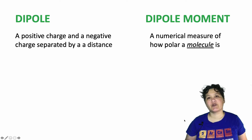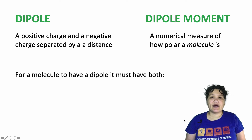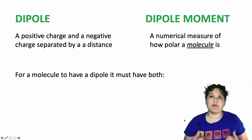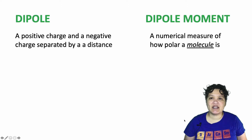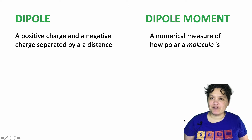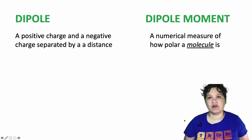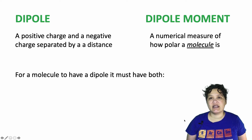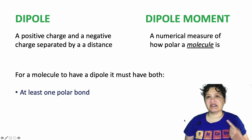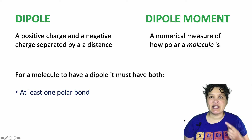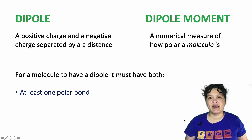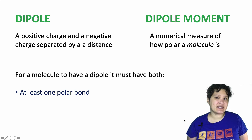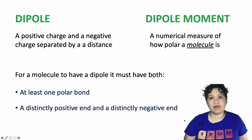Up until now we've been talking about dipoles in terms of a single bond. Now we're going to apply that to a whole molecule, which may have more than one bond. For any molecule to have a dipole, two things must be true: first, it must have at least one polar bond; second, it needs to have a distinctly positive end and a distinctly negative end.